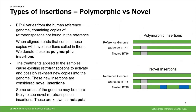The treatments applied to the samples cause existing retrotransposons to activate and possibly reinsert new copies into the genome. These new insertions are what we consider novel inserts, shown in blue on the right, and these are what we're interested in. We're interested in quantifying exactly how many novel insertions from each type of retrotransposon repeat family there are in each of the treated samples. Some areas of the genome may be more likely to see novel retrotransposon inserts, and we call these areas hotspots.